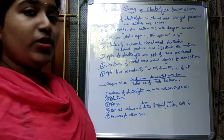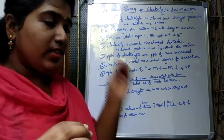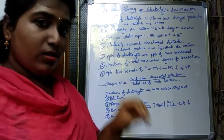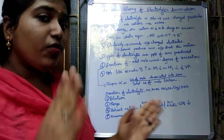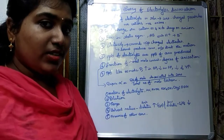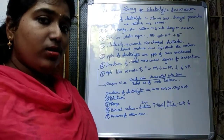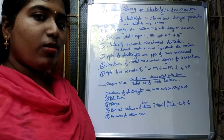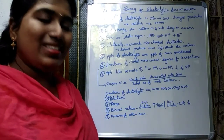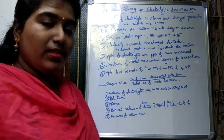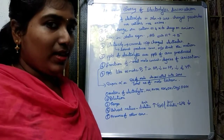The first point: when a particular electrolyte is dissolved in a solution, it splits into ions of opposite charges. The positively charged ions are called cations and the negatively charged ions are called anions. This is a very basic thing we have already studied in our earlier classes.